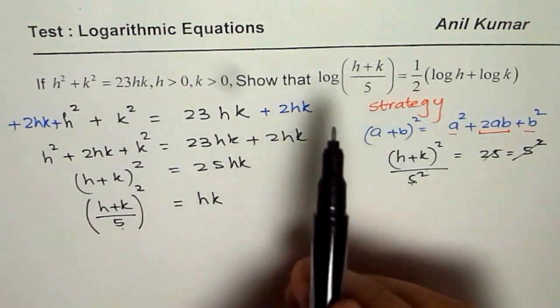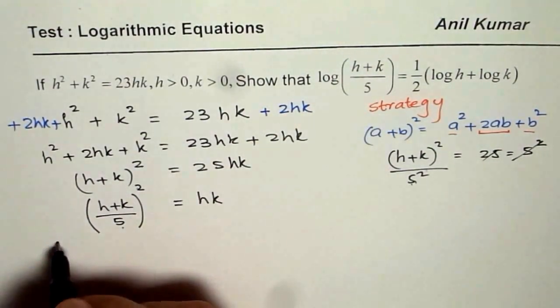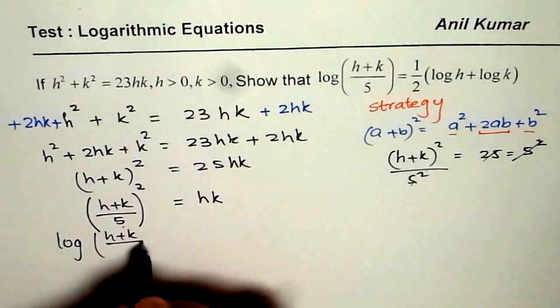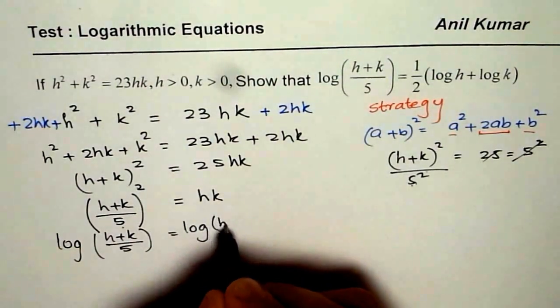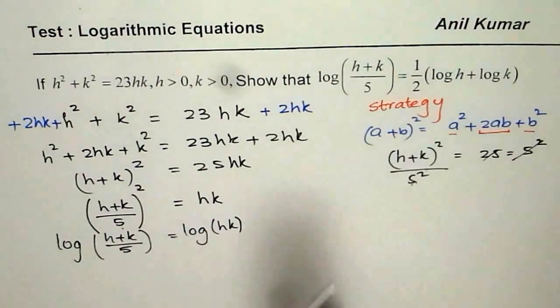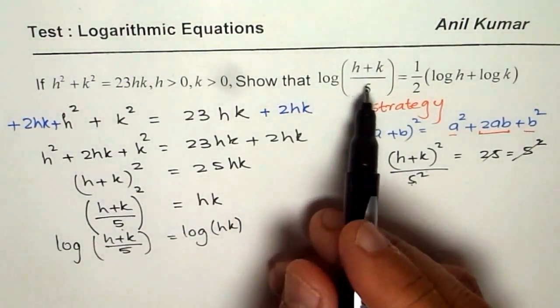Now, we have this, and we are just missing the log. So let's take log on both sides. We get log((h+k)/5)² = log(hk). So we are approaching our solution. I hope you appreciate it. We are approaching our solution.